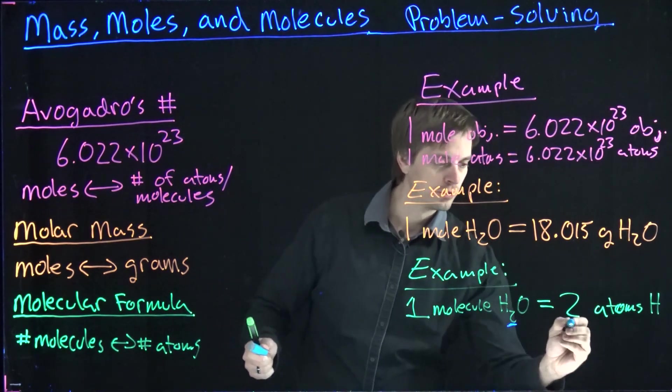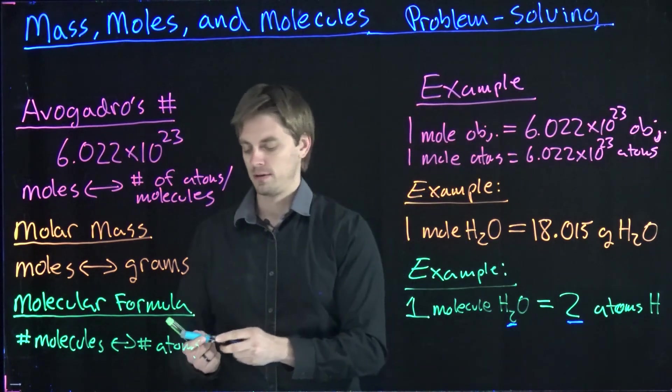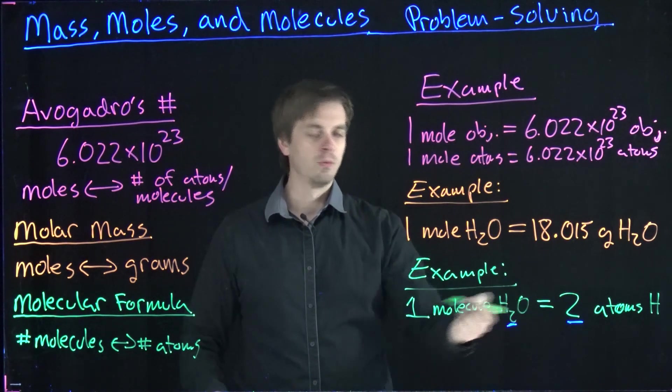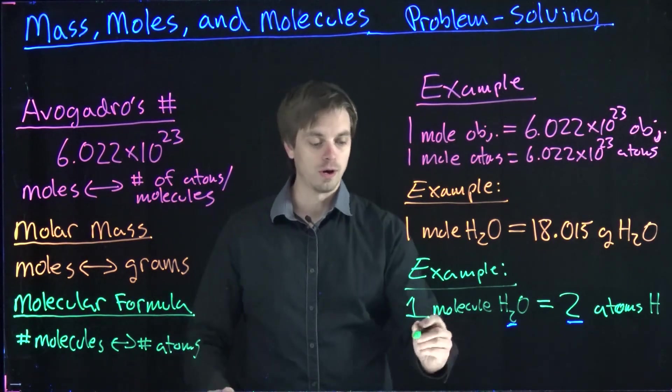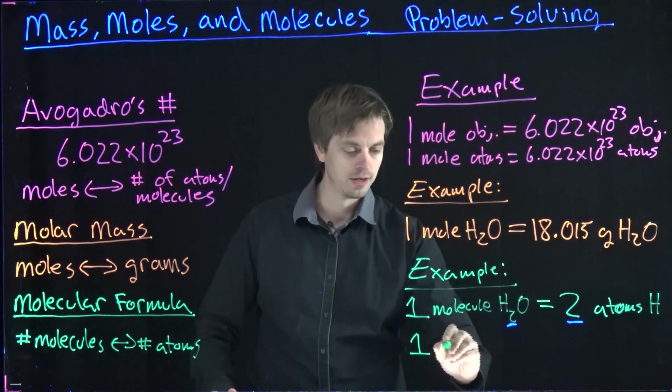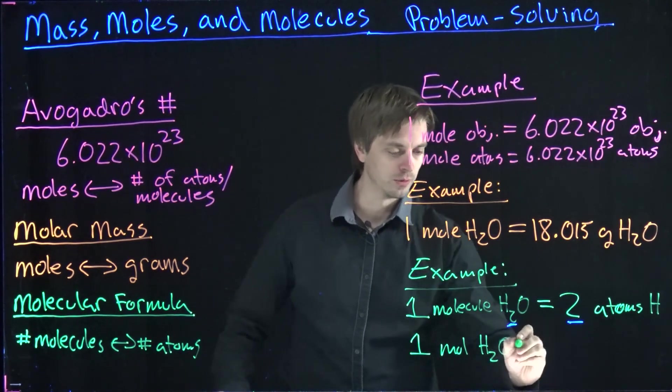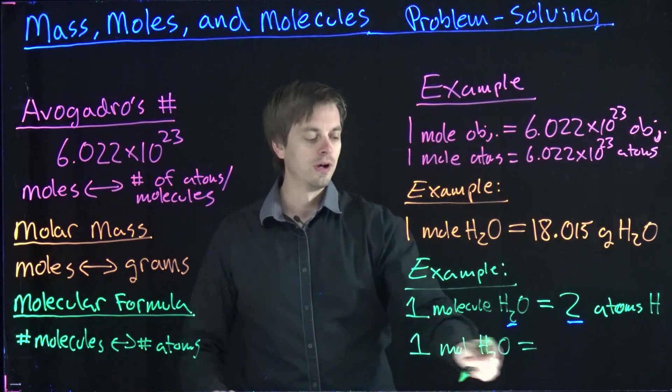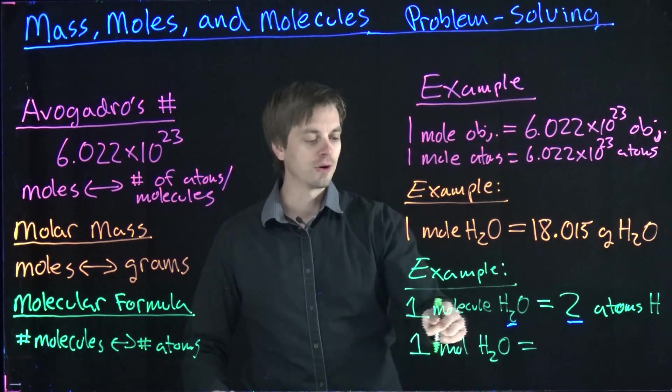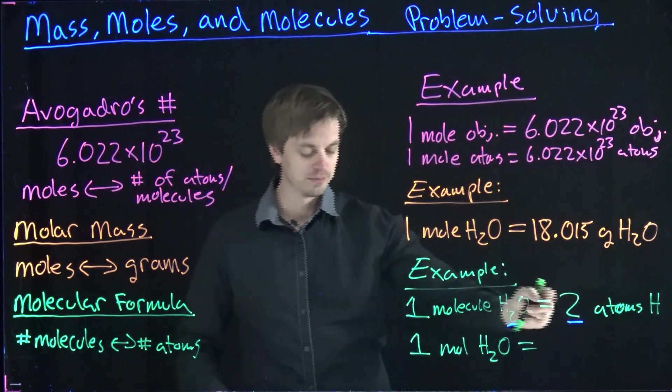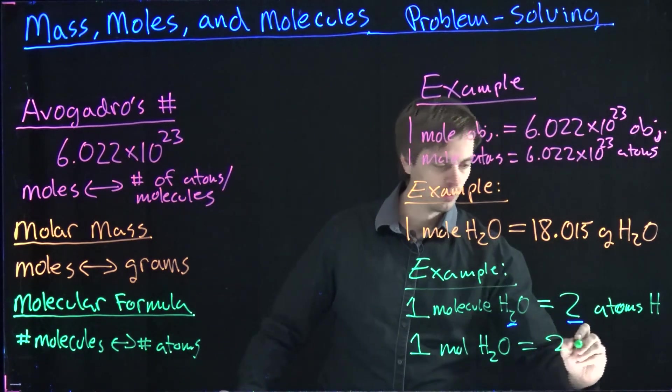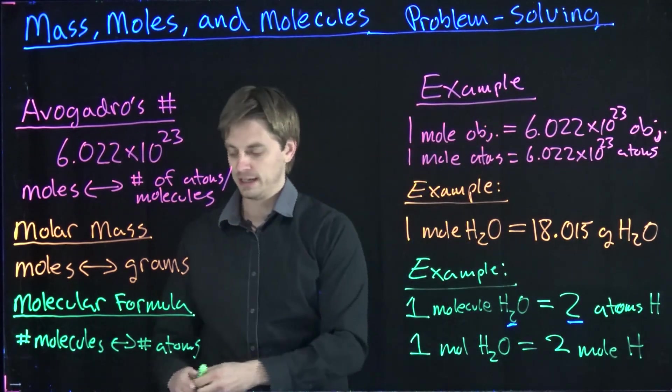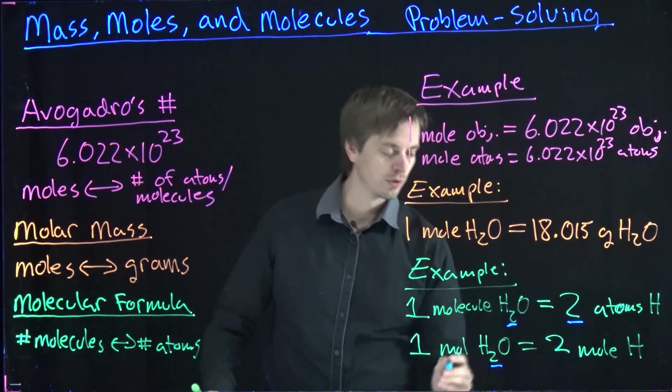This could also hold not just for molecules of water, but say I had an entire mole of water. If I had one mole of H2O molecules, that just means I have Avogadro's number of H2O molecules. And for every one molecule of H2O I know I have two atoms, that means I have two moles of hydrogen atoms, again looking at that subscript in the chemical formula.